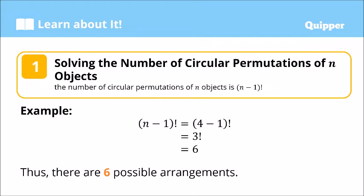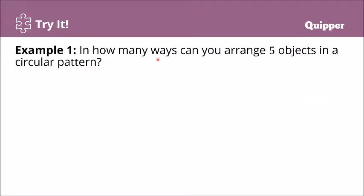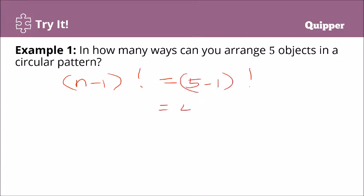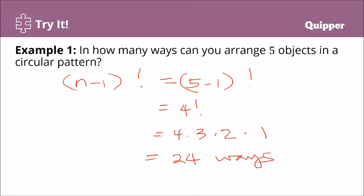So there are six circular permutations of four objects. Let's try another: in how many ways can you arrange five objects in a circular pattern? That is (n - 1)! with n = 5, so that is (5 - 1)! = 4! = 4 × 3 × 2 × 1 = 24. So there are twenty-four circular permutations, or twenty-four ways to arrange five objects in a circular pattern.